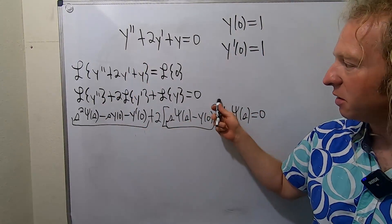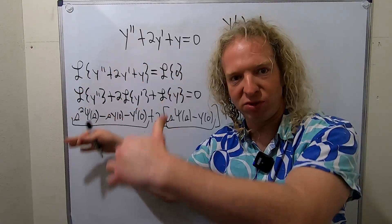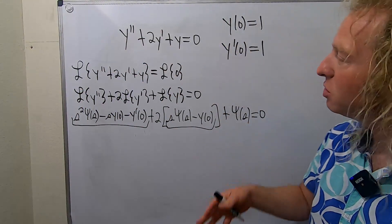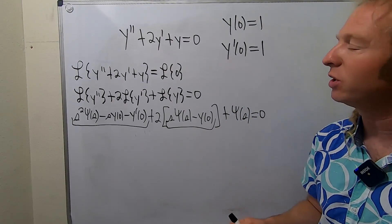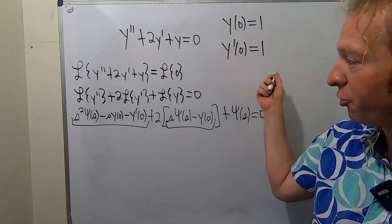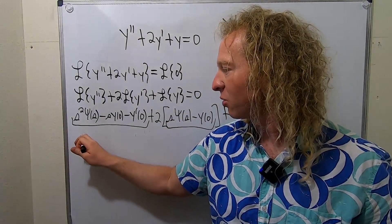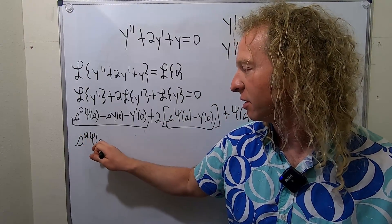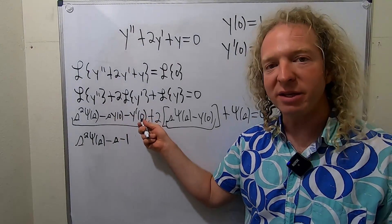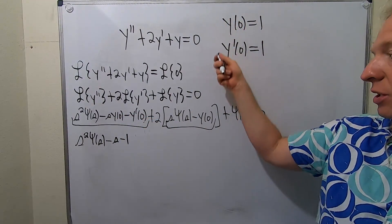So step one, take the Laplace. Step two, use these cryptic formulas. Now we actually use our initial conditions. So we use them early in the problem which is really nice. So Y of zero is one and Y prime of zero is one. They're all ones. So this is S squared pitchfork Y of S minus S minus one. So this is a one and this is a one. We're using our initial conditions.